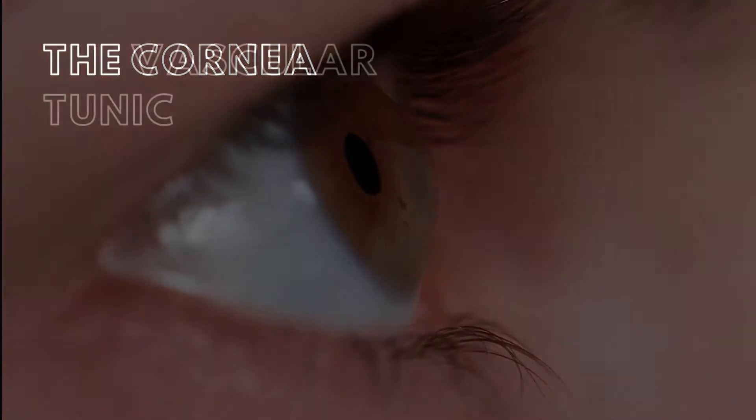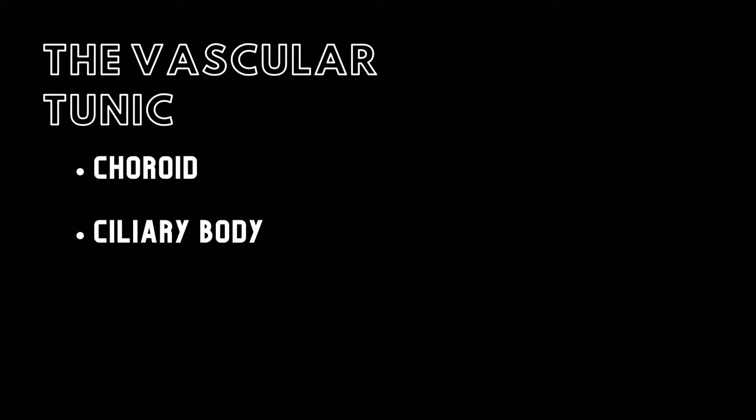The middle layer of the eye is the vascular tunic. The vascular tunic is composed of the choroid, ciliary body, and the iris.